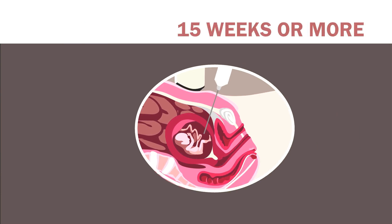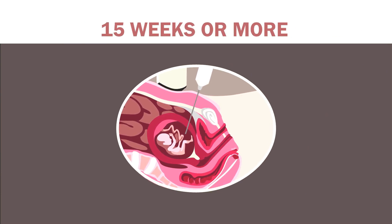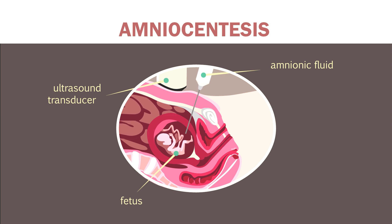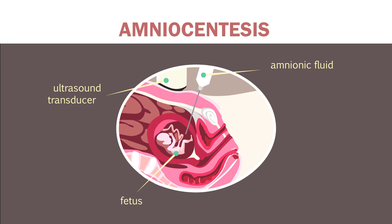At and above 15 weeks of gestation, amniocentesis can be performed. In this procedure, a needle is advanced through the abdomen into a pocket of amniotic fluid surrounding the fetus. This fluid is rich in cells from the amniotic and lower urogenital tract of the fetus, which can be grown in culture to be further analyzed for genetic abnormalities.